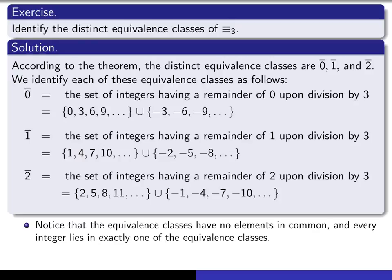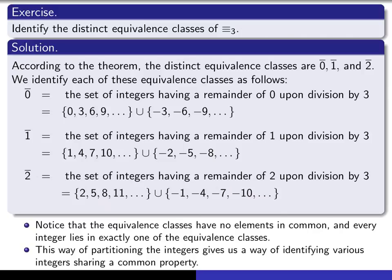Notice that these equivalence classes have no elements in common — any element appearing in one list cannot appear in the others. Furthermore, every integer lies in exactly one of these equivalence classes, giving us a partition of the integers. We're identifying all elements in each class: relative to congruence modulo 3, every integer in a class behaves essentially the same way as every other one in that class.